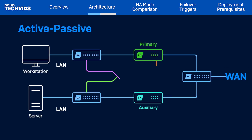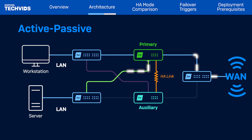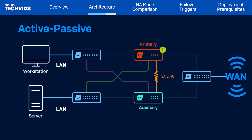The two modes that can be configured for high availability are active-active and active-passive. Active-passive HA pairs process all traffic on the primary node, only failing over to the passive node when the primary node fails. The auxiliary device participates in the cluster but does not process network traffic — it remains on standby until the primary device fails. If this occurs, the auxiliary becomes the primary device and continues to process all network traffic.